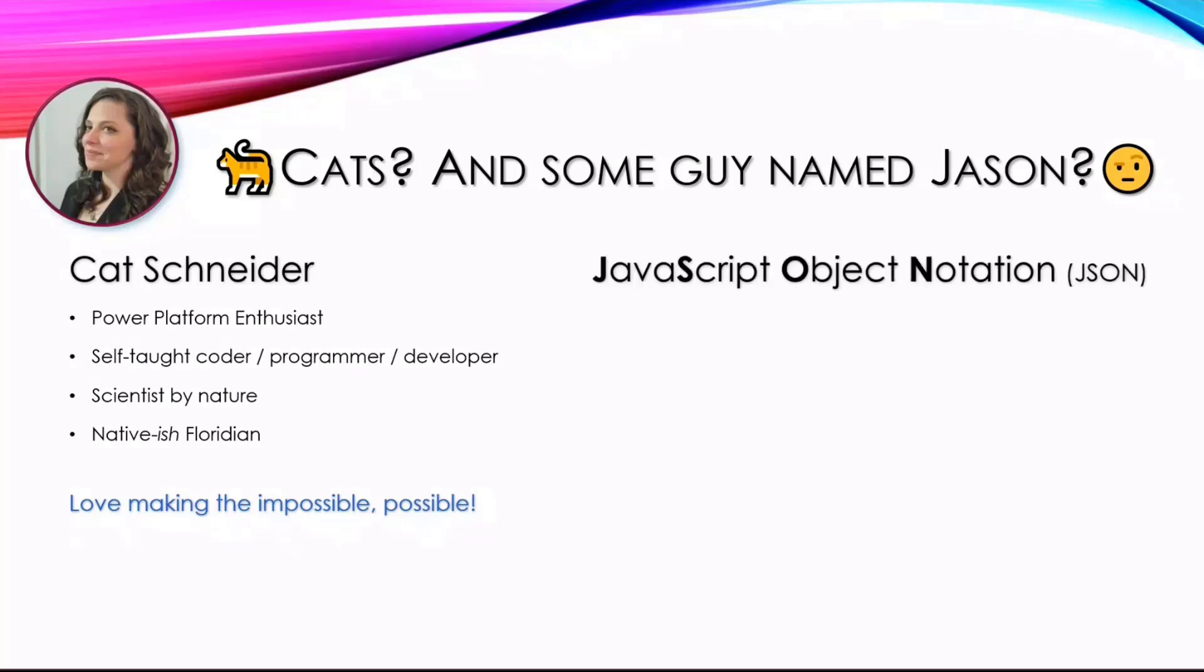Something about Jason. I'm kidding. It's actually the JavaScript Object Notation, otherwise known as JSON, which is what, you ask?